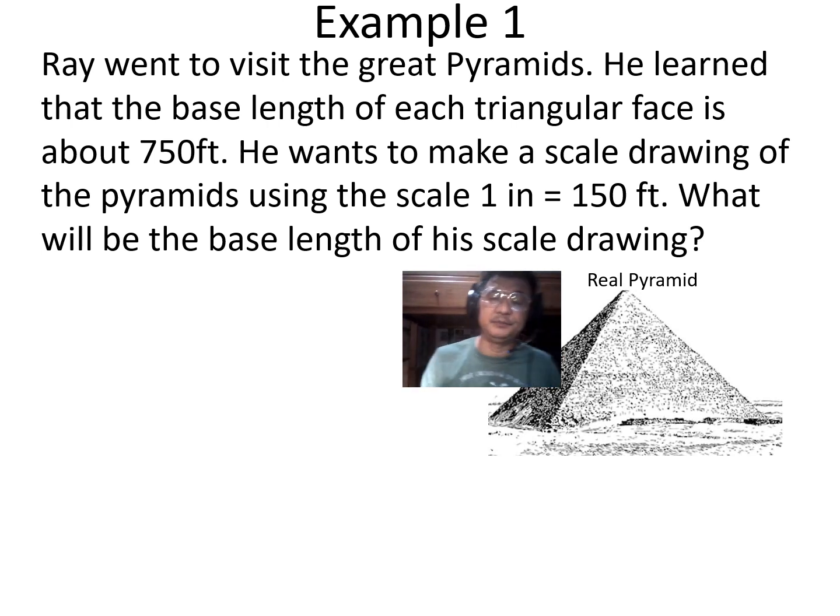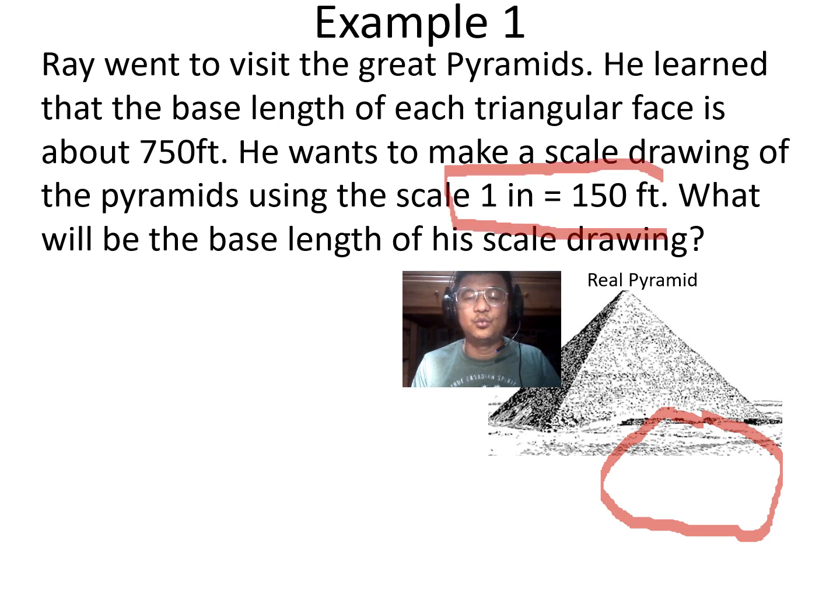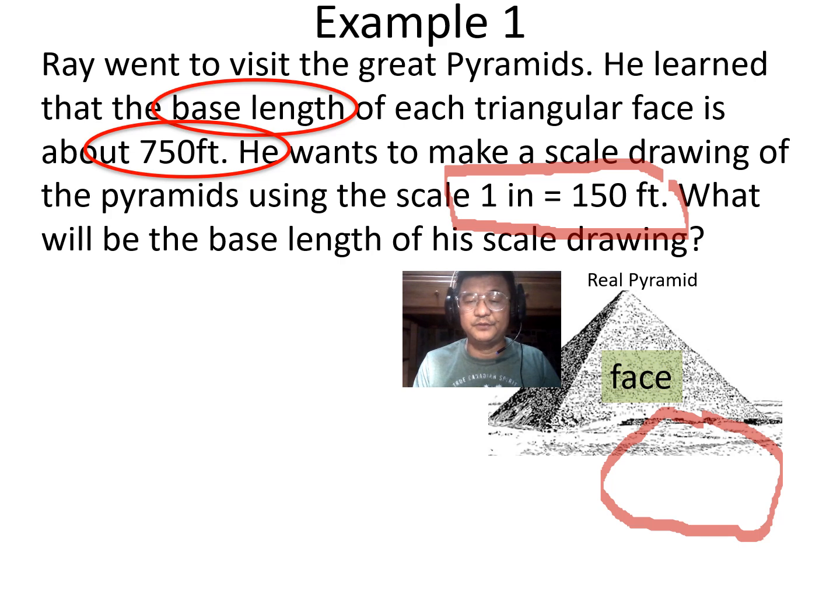Ray went to visit the Great Pyramids. He learned that the base length of each triangular face is 750 feet. So the base below here is 750 feet. You see that, right? There. Now, he wants to make a scale drawing of the pyramids using the scale. This is the scale he's going to use: 1 inch is to 150 feet. What will be the base length of his drawing? So let's start. The base length is 750 feet. That's the face. The triangle's the face. The base is the bottom.